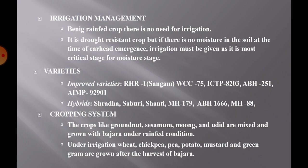For the cropping system, legume crops like groundnut, sesame, moong and cowpea are mixed and grown with Bajra under rain-fed conditions. Intercropping with these crops is most remunerative and gives higher profit. Under irrigation, wheat, chickpea, potato, mustard and green gram are grown after the harvest of Bajra.